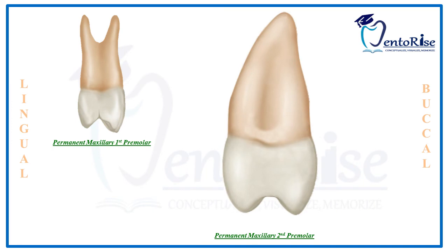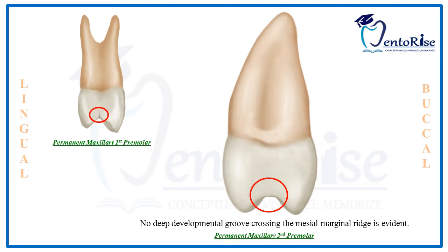Now, coming to the most important point: the presence of a deep developmental groove crossing the mesial marginal ridge is a very characteristic feature of permanent maxillary first premolar. However, in a permanent maxillary second premolar, no such deep developmental groove crossing the mesial marginal ridge is evident. This is a very important point to differentiate between these two teeth.